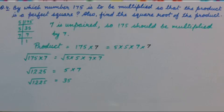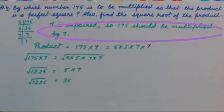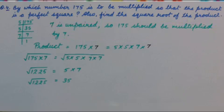Clearly we can see it is not a perfect square because 7 is unpaired. So if we have one more 7 in its factors it will be a perfect square. So we will multiply 175 by 7. Now second part.